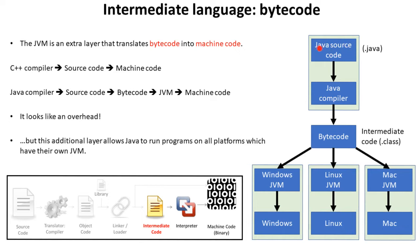The Java source code which the programmer would actually write and edit produces a file with a .java extension. They could be writing this on any type of computer — a Windows machine, a Mac, or a Linux machine. When they're happy that it's bug free and ready, they then run the compilation tool on their machine, and it produces bytecode. This is the Java version of its intermediary code, and this bytecode has a separate extension called .class.